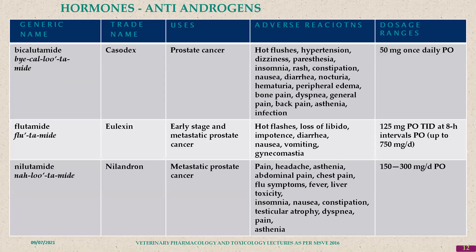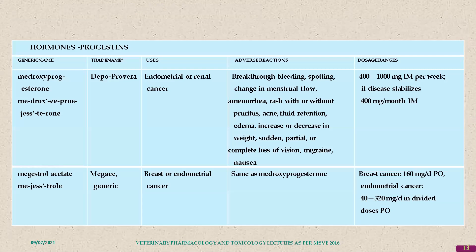Antiandrogens include bicalutamide, used in prostate cancer. Flutamide is used in the early stage of metastatic prostate cancer. Nilutamide is used in metastatic prostate cancer. Progestins like medroxyprogesterone are used in endometrial or renal cancer in human medicine.